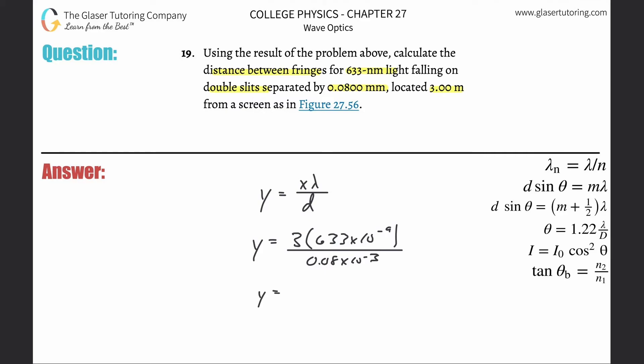Simply take out the calculator: it's going to be 3 times 633 times 10 to the minus 9, divided by 0.08 times 10 to the minus 3. This works out to be about 0.0237 meters.